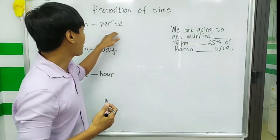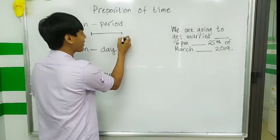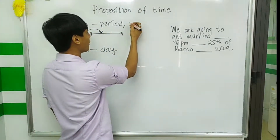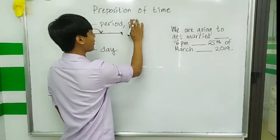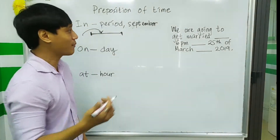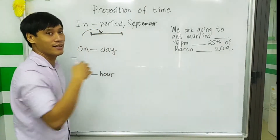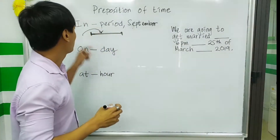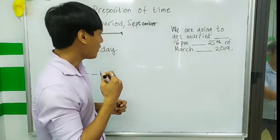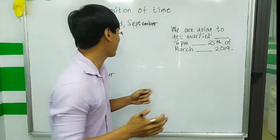For the preposition 'in', we use it for a period — a certain time length. For example, 'in September'. The months January, February, March, April, May, June, July, August, September — the whole month is a period, so we use 'in'. For example, 'in September and October'. Also, 'in the 21st century' — the whole century is a period, so we use 'in'.